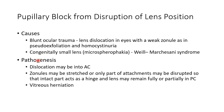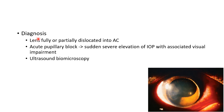Coming to the pathogenesis: there can be dislocation of the lens into the anterior chamber. The zonules may be stretched or only part of the attachments may be disrupted, so that the intact part acts as a hinge and the lens may remain fully or partially in the posterior chamber. There can also be associated vitreous herniation. The lens, fully or partially dislocated into the anterior chamber, can be seen on examination.